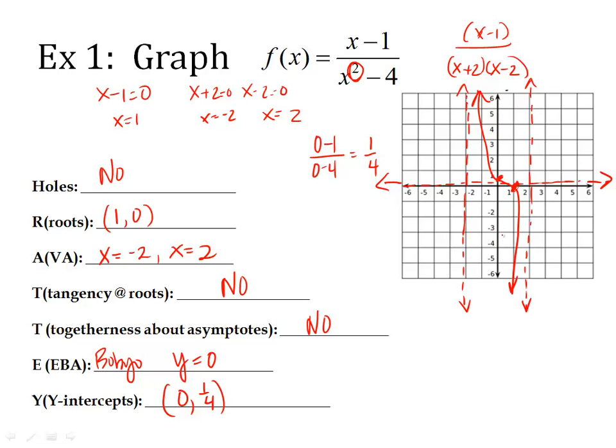Now, there's something happening in every section created by your asymptote. So we know what's happening in the middle. Now we have to figure out what's happening on the outer edges. Well, we know because of the togetherness stuff. This one says there's no togetherness. So if my line is up here in the middle, that means the outside L is going to be in the bottom on the left. If my line is down here in the middle, then on the right, it's going to be in the top. So those lines are not together next to the asymptotes. That's what togetherness means. So this is what my graph would look like roughly for this rational function.